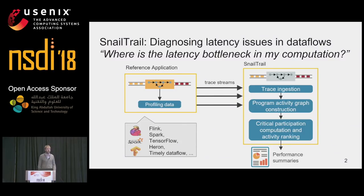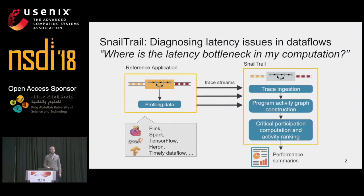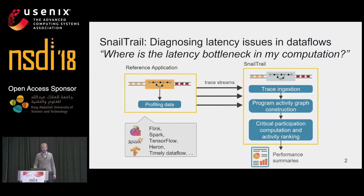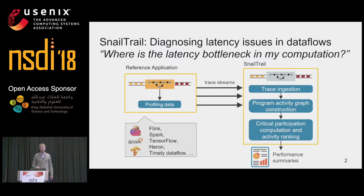If you are running a distributed data flow application and notice that it has latency problems, you can simply go ahead and add lightweight instrumentation to it that outputs some performance records. SnailTrail will go ahead, read those records and do all the hard work for you. It constructs an activity graph representation of those records and performs a ranking of activities according to the critical participation, which is a metric that we introduced.